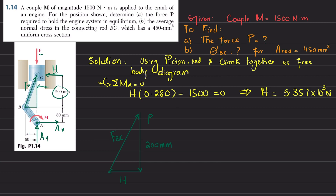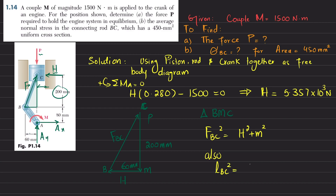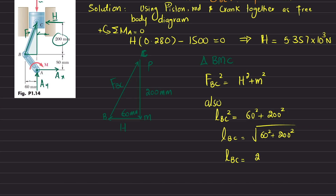Considering triangle BMC, where the horizontal side is 60 mm and the vertical side is 200 mm, we apply the Pythagorean theorem: L_BC² = 60² + 200². Therefore, L_BC = √(60² + 200²) = 208.81 millimeters. This is the length of connecting rod BC.